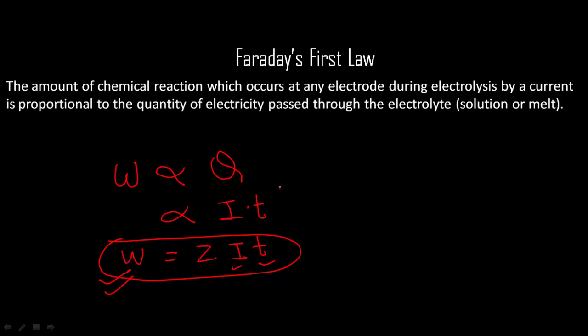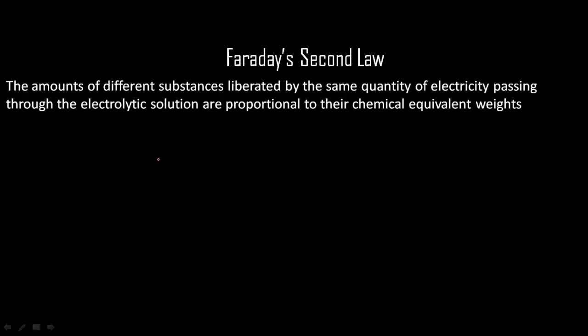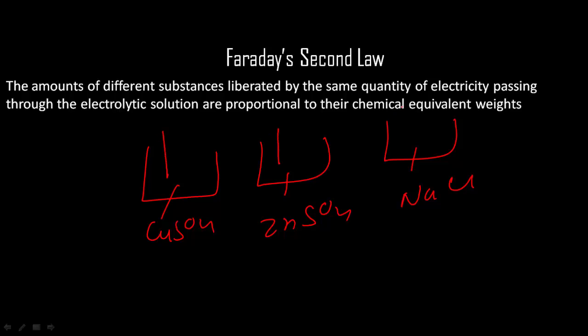The second law says, let's say I have CuSO4 solution, I have ZnSO4 solution, I have NaCl solution and so on. If I pass electricity through all the three, will the amount of metal produced be the same at all the three cells, all the three electrolytes, or will it be different? And if it would be different, then what would be the order?